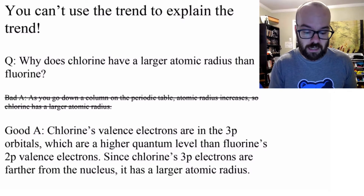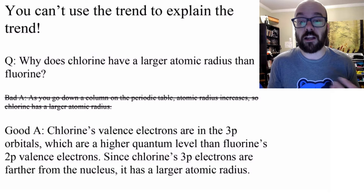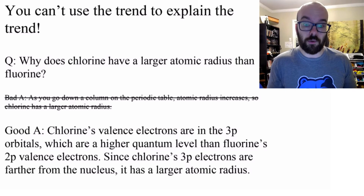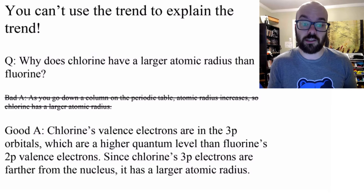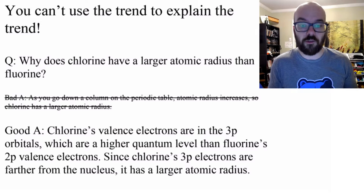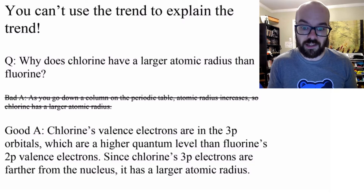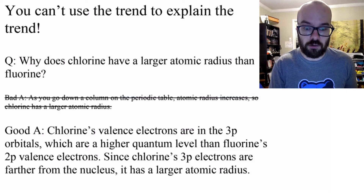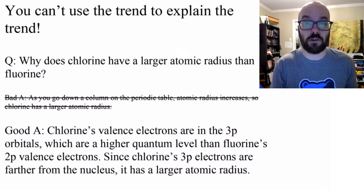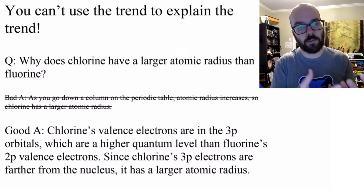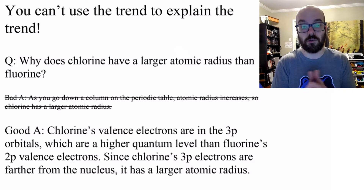A better answer is: chlorine's valence electrons are in the 3p orbitals, which are a higher quantum level than fluorine's 2p valence electrons. Since chlorine's 3p electrons are farther from the nucleus, it has a larger atomic radius. That's a better answer because it's using Coulomb's law and energy levels — distance from the nucleus — to explain why chlorine has a larger atomic radius. So we need to use Coulomb's law to explain the trend; you can't use a trend to explain the trend.